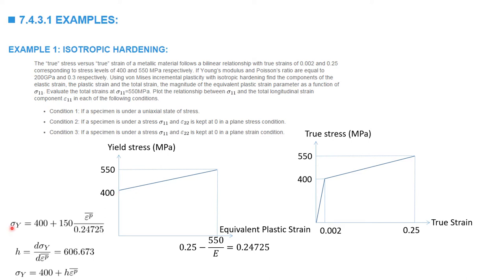This curve can be described mathematically as: sigma_yield equals 400 plus the slope H multiplied by the equivalent plastic strain. The slope is 150 divided by 0.24725, where 150 is the difference between 550 and 400, giving H equal to 606.673. So sigma_yield equals 400 plus H times the equivalent plastic strain.